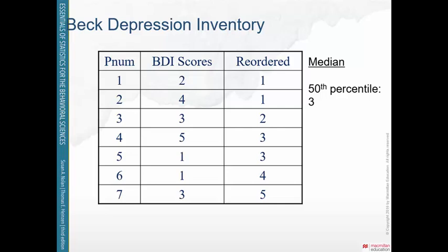I've taught statistics for many years, and there's always someone who takes a random list of numbers and finds the middle score without reordering — that's not the median. You must reorder your data first. If we had an eighth data point where person eight got a six, we'd have an even number of scores. The two middle numbers would be three and three; three plus three equals six, divided by two gives you three. The median would still be three.